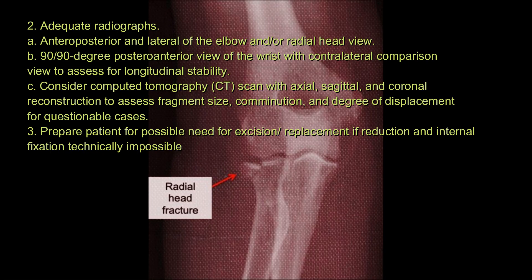Imaging: 2. Obtain adequate radiographs — anteroposterior and lateral of the elbow and/or radial head view. B. 90-degree posteroanterior view of the wrist with contralateral comparison view to assess for longitudinal stability. C. Consider CT scan with axial, sagittal, and coronal reconstruction to assess fragment size, comminution, and degree of displacement for questionable cases. 3. Prepare the patient for the possible need for excision/replacement if reduction and internal fixation is technically impossible.